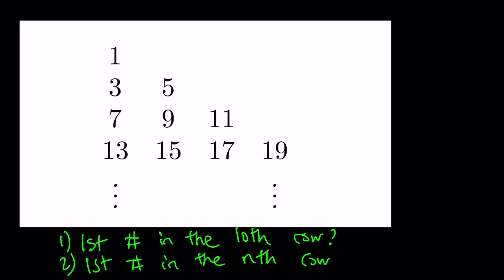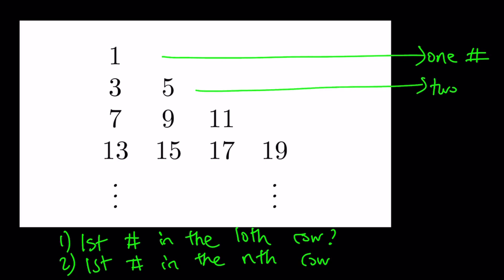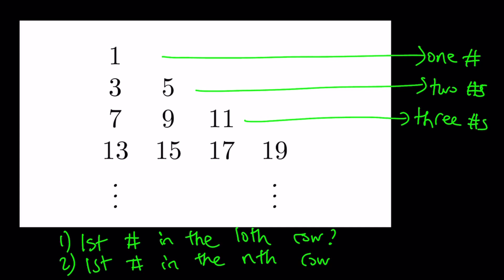Let's take a look at this table or array — this arrangement of numbers. The top row only has one number, we have two numbers in the second row, and three numbers after that. If you are trying to find the first number in the fourth row, think about this: you have 13. How many numbers are there before 13? One, two, three, four, five, six. So the million dollar question is: why are there six numbers before 13, and how can we find that number?